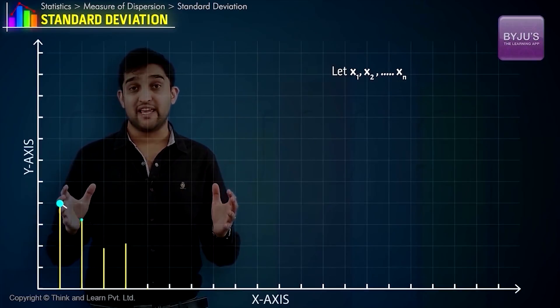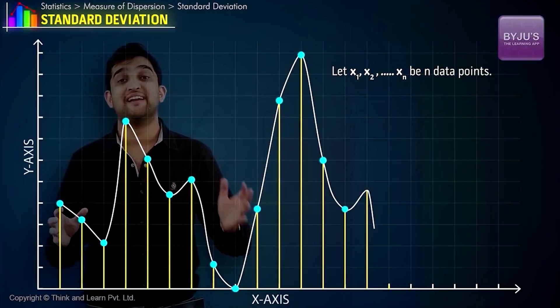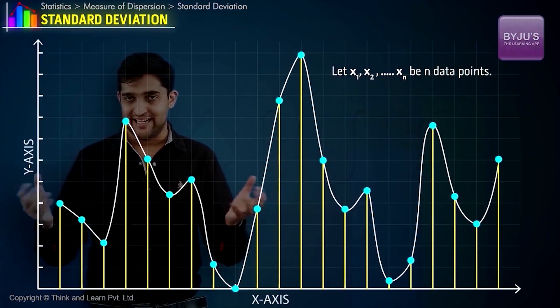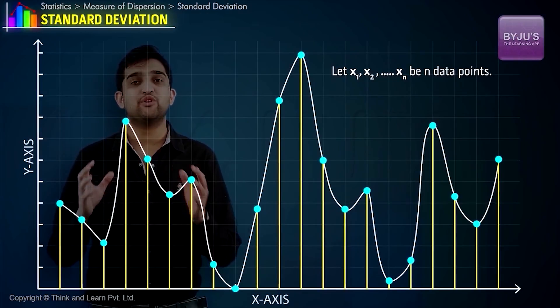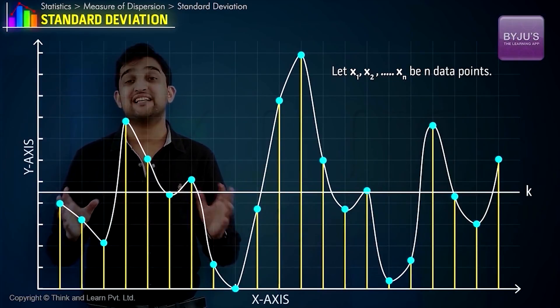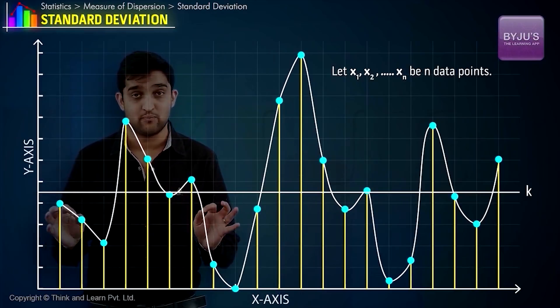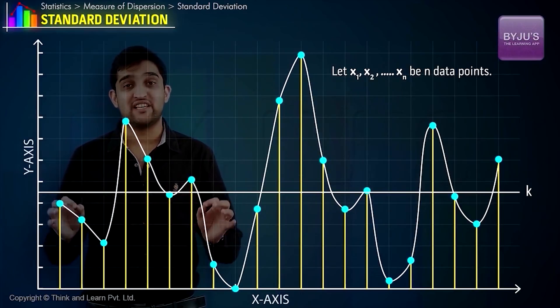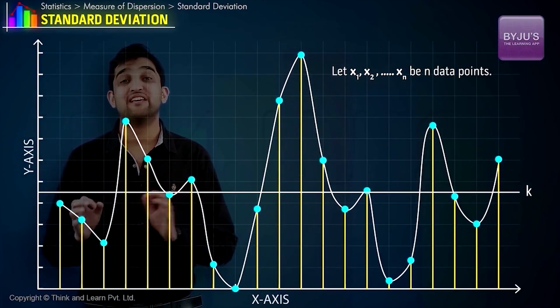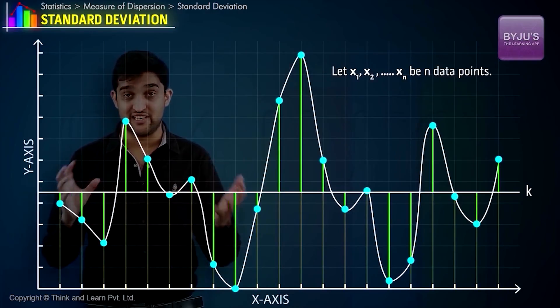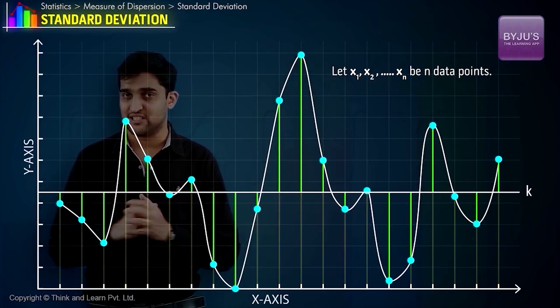Let's say we have x₁, x₂, ..., xₙ, which are n data points. The first step is to calculate the central tendency. Let's take the central tendency to be k. We know xᵢ - k for all i will give us the deviations about the central tendency for this dataset.